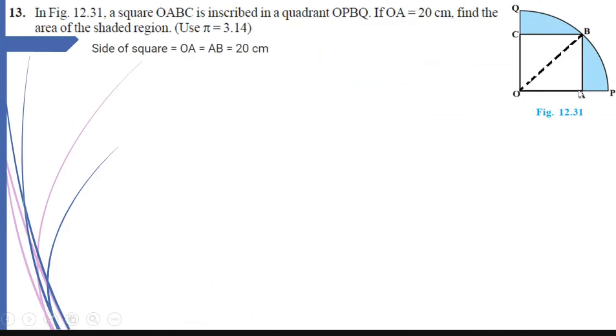So let us see how it is done. I know that the side of the square is 20 cm. So OA is equal to AB is equal to 20. Radius of the quadrant is equal to OB.